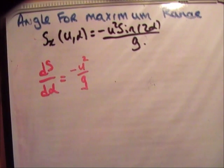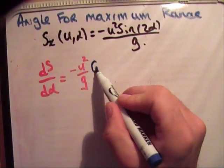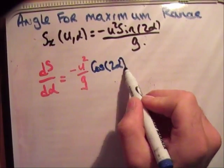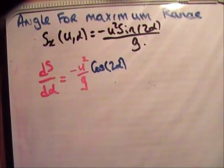So, differentiate sine. This is the chain rule. So, it's differentiate sine, we get cosine. And then you differentiate the argument here. So, 2 alpha becomes 2.